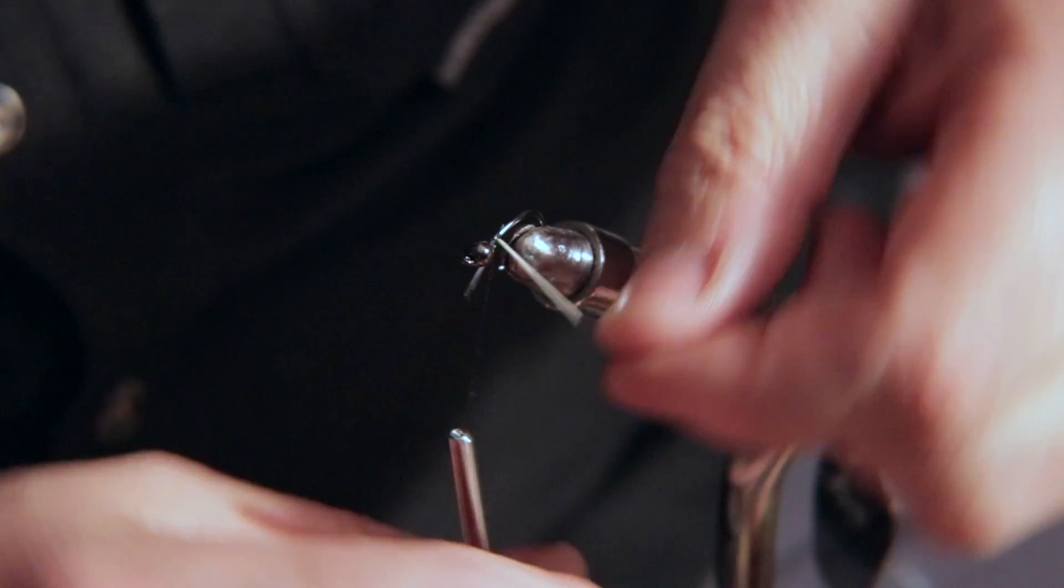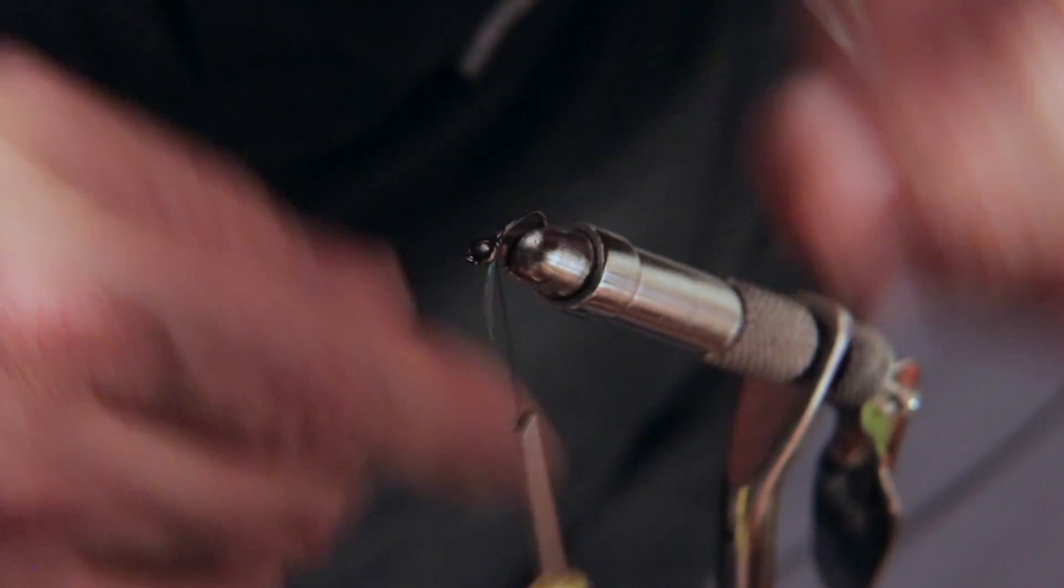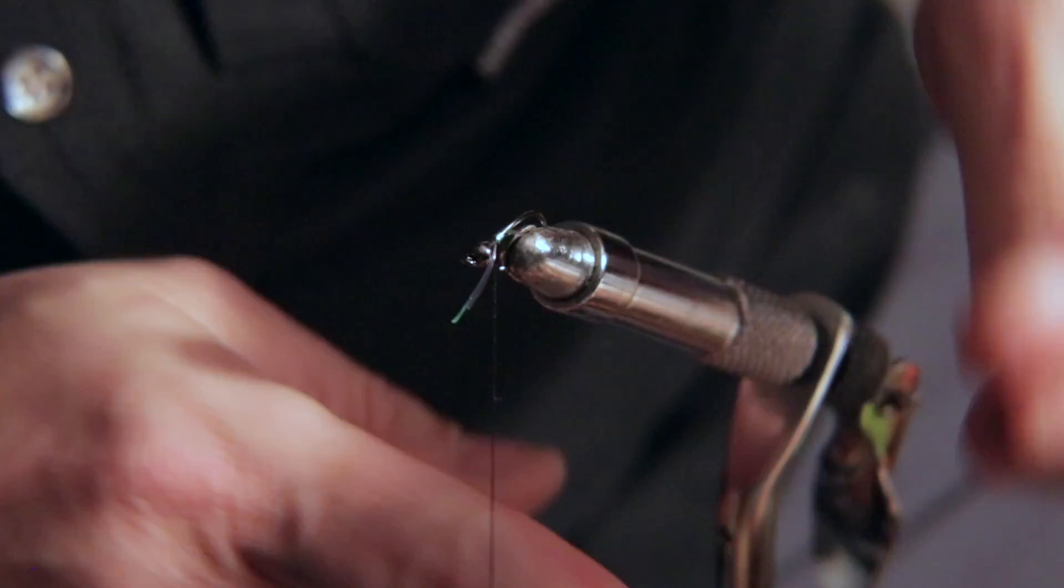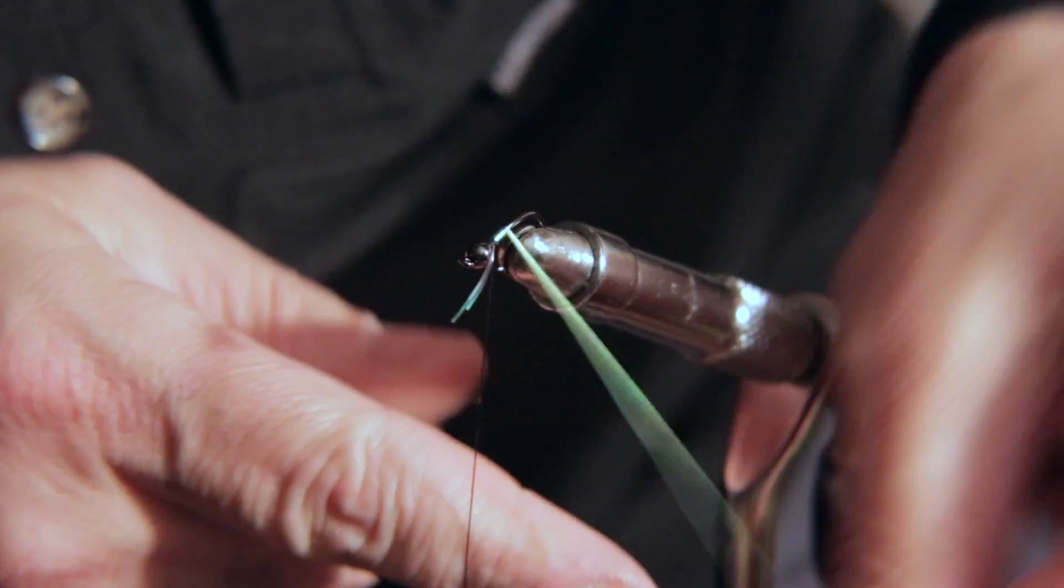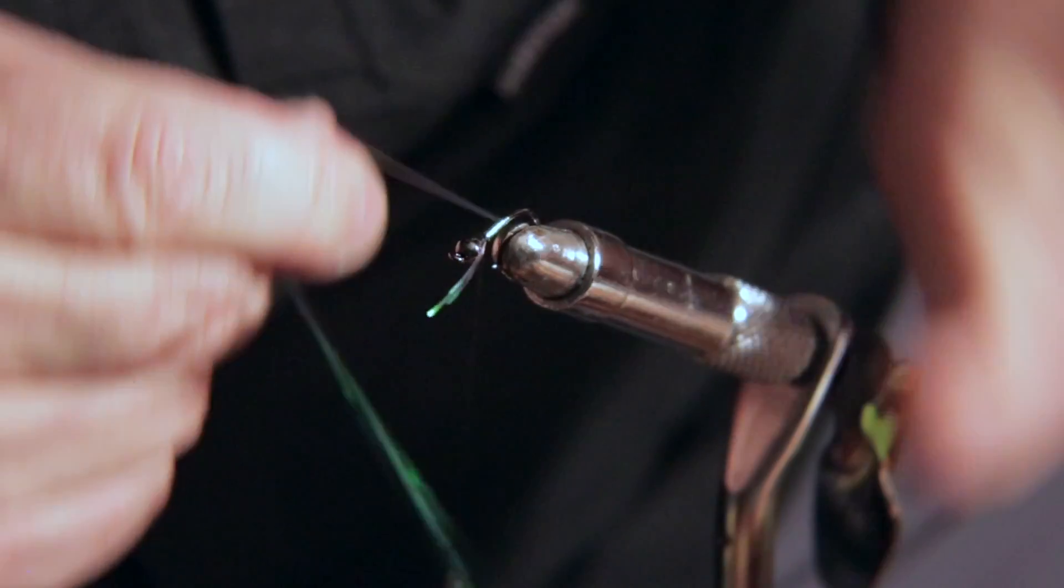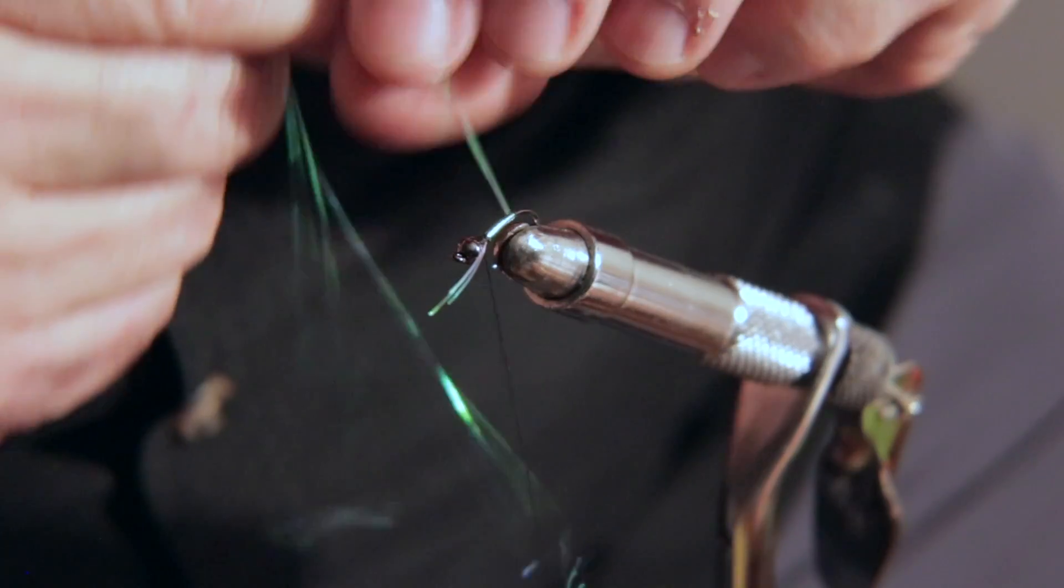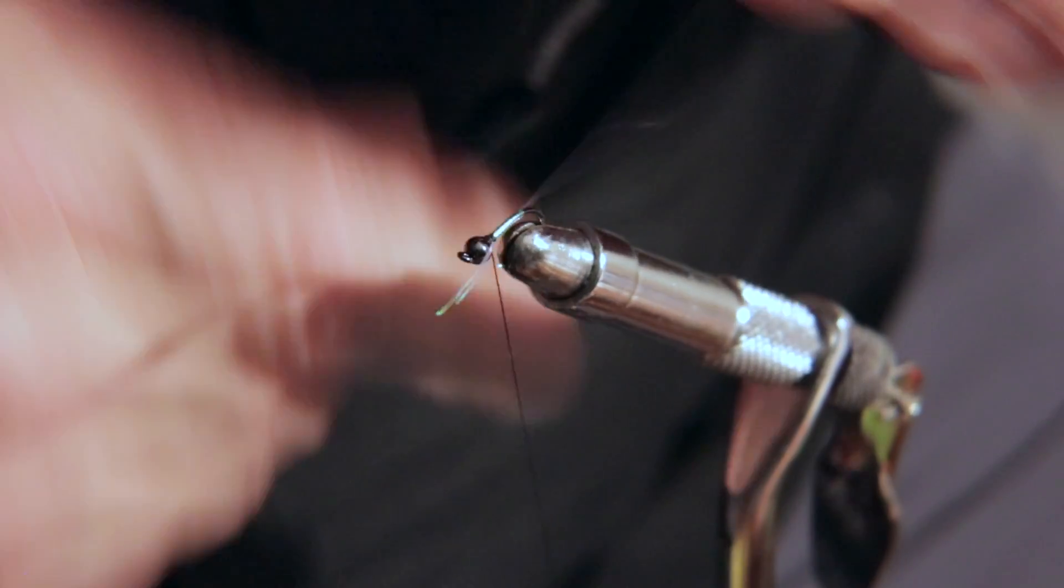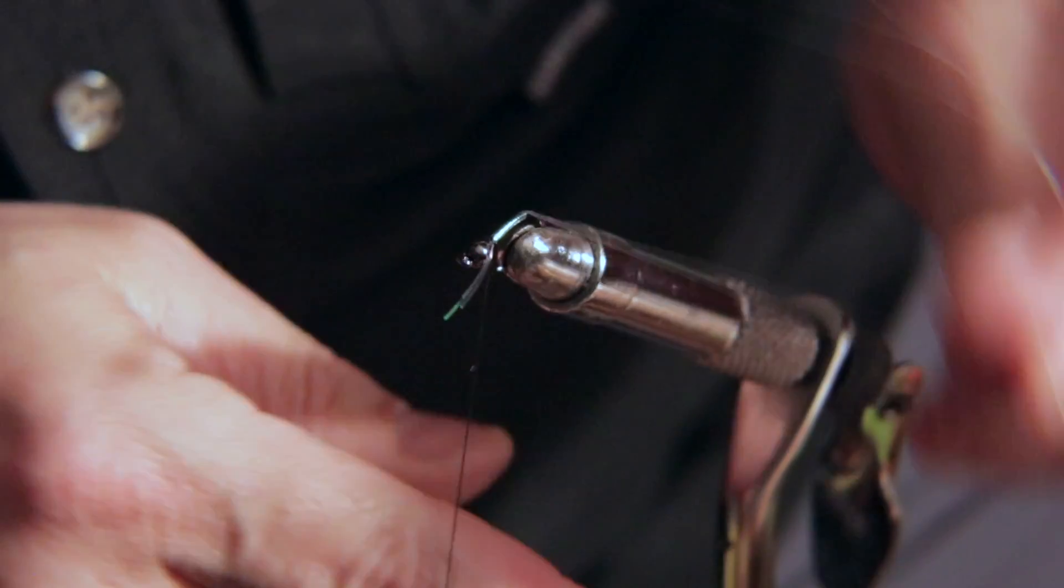I'm just going to tie those in and then all I'm going to do is wrap them around. I'm just adding some body flash. I'm just going to go pretty simple. I go back to where the bend of the hook is. And that's generally where I'll stop.